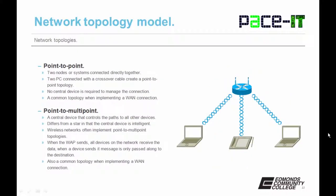Let's move on to the point-to-point topology — that's where two nodes or systems are connected directly together. For two PCs, they use a crossover cable to create a point-to-point topology, with no central device to manage the connection. This is still a common topology when implemented across a WAN connection utilizing a T1 line.